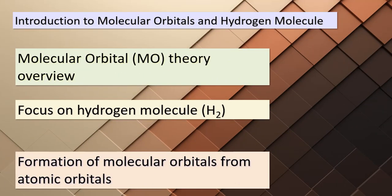Today we're delving into the intriguing world of molecular orbitals, starting with a focus on the hydrogen molecule H₂. Molecular orbital theory, or MO theory, offers us valuable insights into how atoms come together to form molecules. When two atomic orbitals overlap, they give rise to two new molecular orbitals. In the case of H₂, we're working with the two 1s atomic orbitals — one for each hydrogen atom. The first molecular orbital is created by combining the wave functions of the two 1s orbitals through a constructive combination, where the resulting molecular orbital possesses lower energy compared to the original atomic orbitals. We call this the bonding molecular orbital, and it plays a critical role in the stability of the hydrogen molecule.